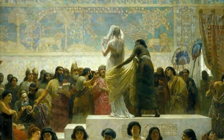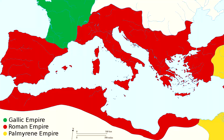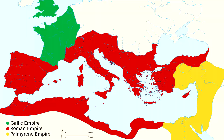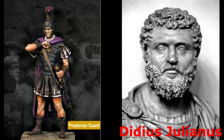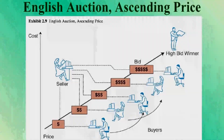The most significant historical auction was on March 28, 193 AD, when the entire Roman Empire was auctioned off by the Praetorian Guards to the wealthy senator Didius Julianus for the price of 6,250 drachmas per soldier.